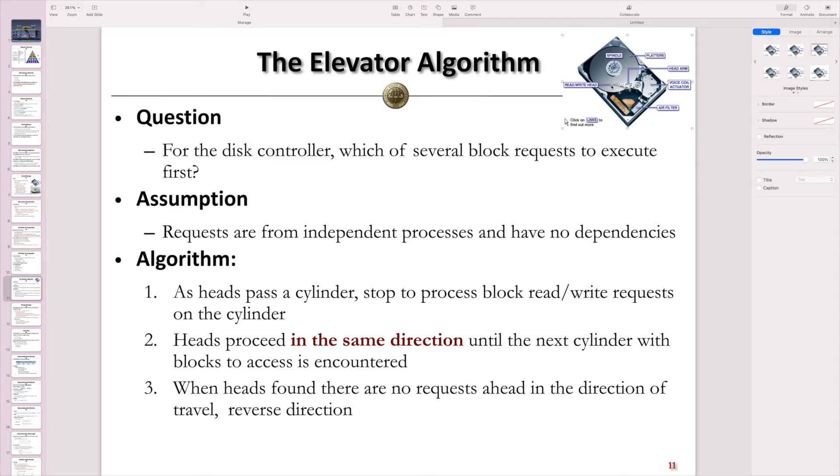Therefore, the algorithm we need to use for deciding these execution orders of different requests from different processes. So, normally when we have the head at a location, as this plate rotates, we will be able to read all the data on the cylinder. If we have some requests and the data is on the cylinder at this location at present, then we will be able to read the data and also execute this request first.